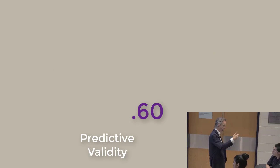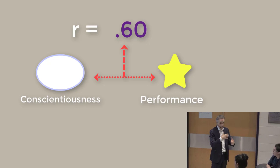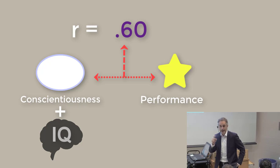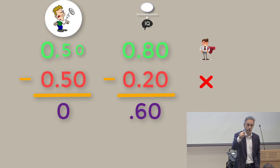Which you could get, for example, if you took conscientiousness and combined that with a good test of IQ for predicting complex jobs, you might be able to get up to 0.6. That moves your odds ratio of selecting an above-average person for the position from 0.50-0.50 to 0.80-0.20.